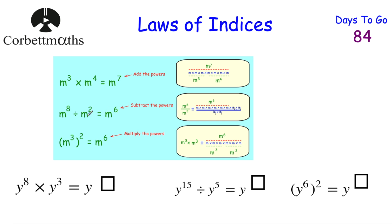Similarly for division: when dividing terms with the same base, subtract the powers. And for a power of a power — for example, (m³)² — you multiply the powers together: 3 × 2 = 6, giving m⁶. These three laws of indices are: multiply → add powers; divide → subtract powers; power of a power → multiply powers.